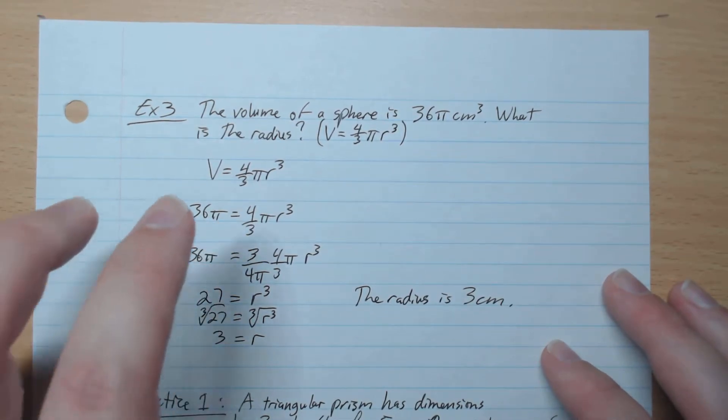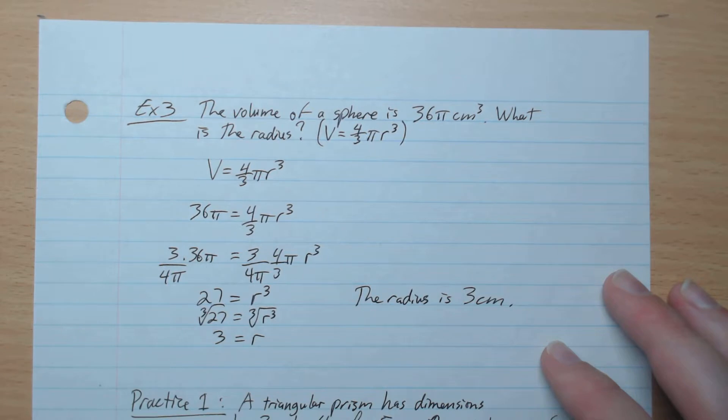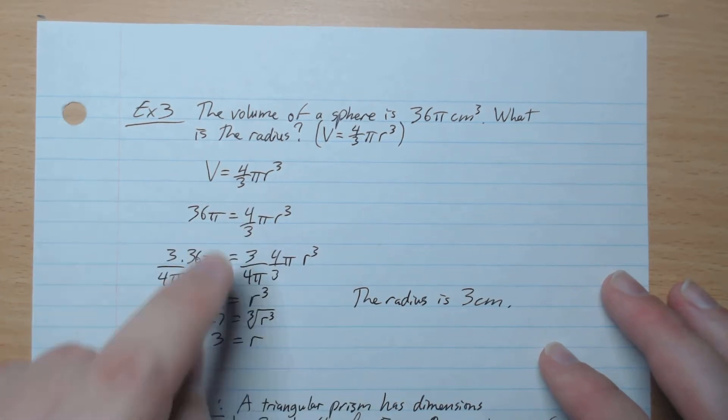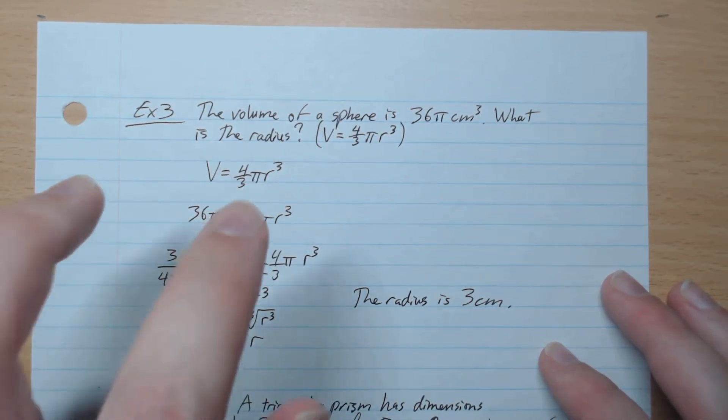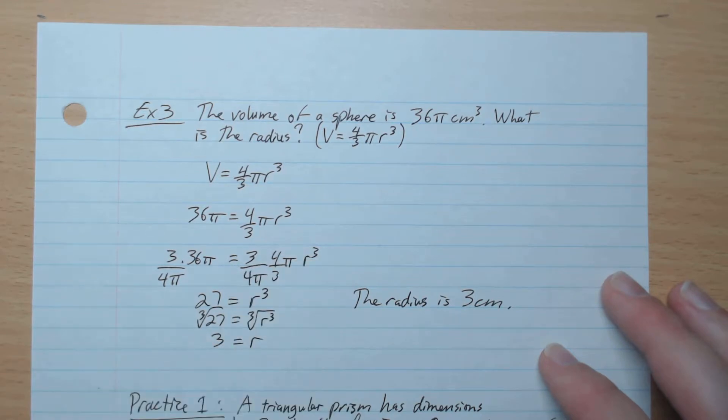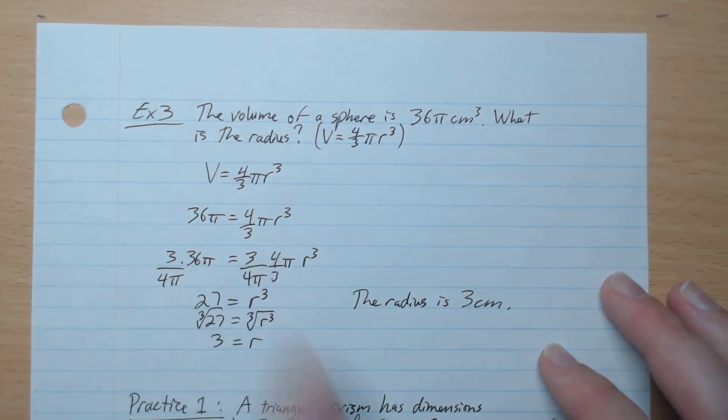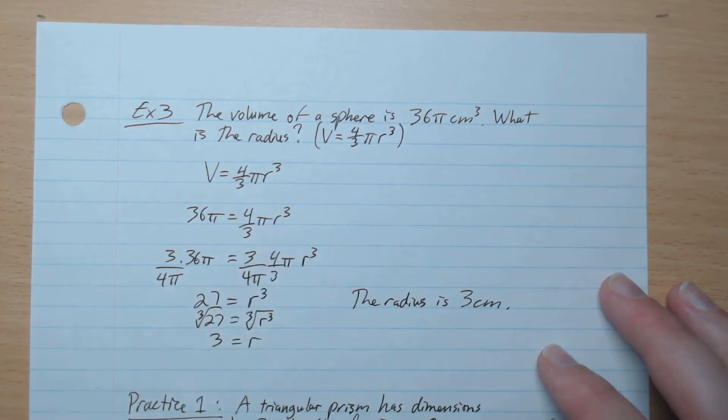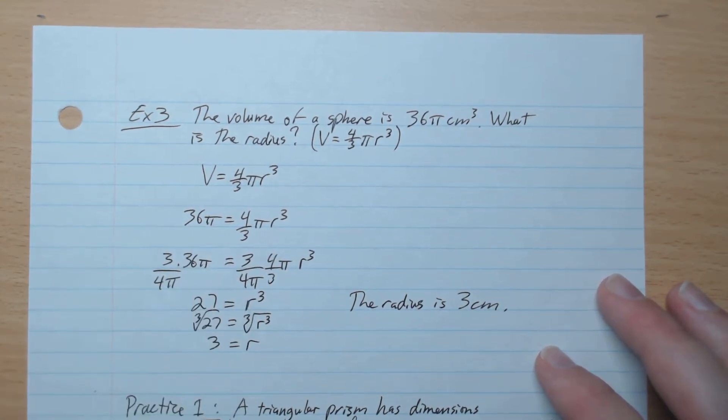We're going to go times 3 both sides to get rid of this 3. Divide 4 on both sides to get rid of this 4. And divide π on both sides to get rid of this π. And so this is what we have on each side. So this cancels out,